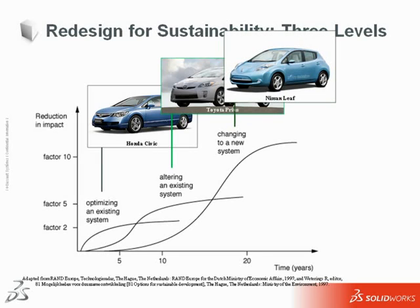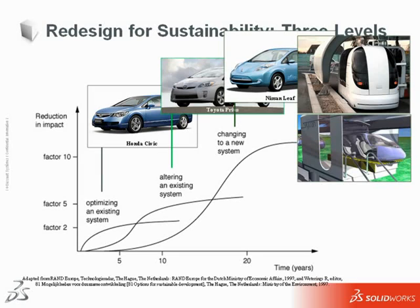Level 3, changing to a new system, is a product that breaks the existing system paradigms. The Nissan Leaf is a car in transition to this third level — it uses some existing product infrastructure like roads and garages, but since it is fueled by electricity, some of this infrastructure must change. Transportation concepts that are truly Level 3 redesigns include Personal Rapid Transit, or PRT, systems, such as this driverless taxi system in London, and a startup concept called SkyTran.